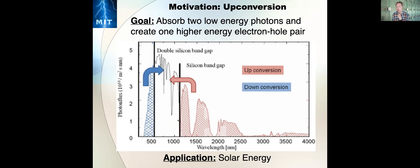I think this will be interesting to the folks in this audience in particular, and that will segue into talking about energy transfer between molecules and nanocrystals, and then finally the idea of triplet-triplet energy up-conversion and its efficiency. So first, energy up-conversion: it's a relatively simple idea — the idea is to have a material that absorbs two low energy photons and creates one higher energy electron-hole pair.